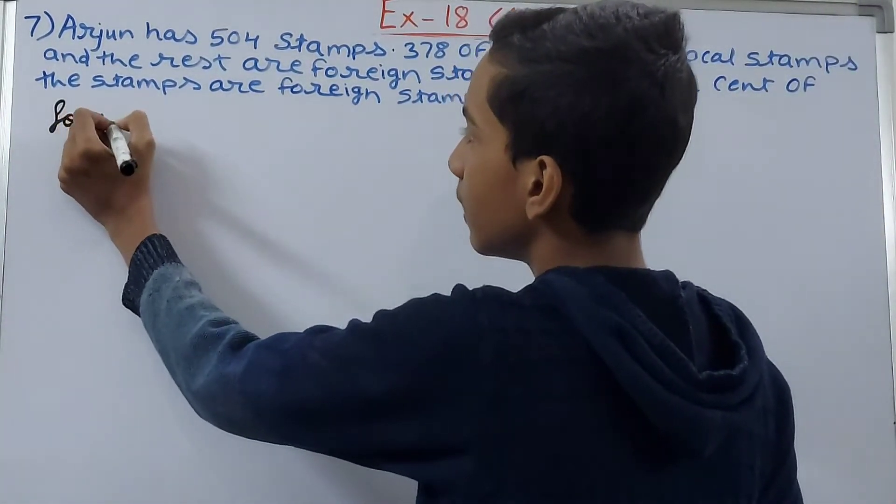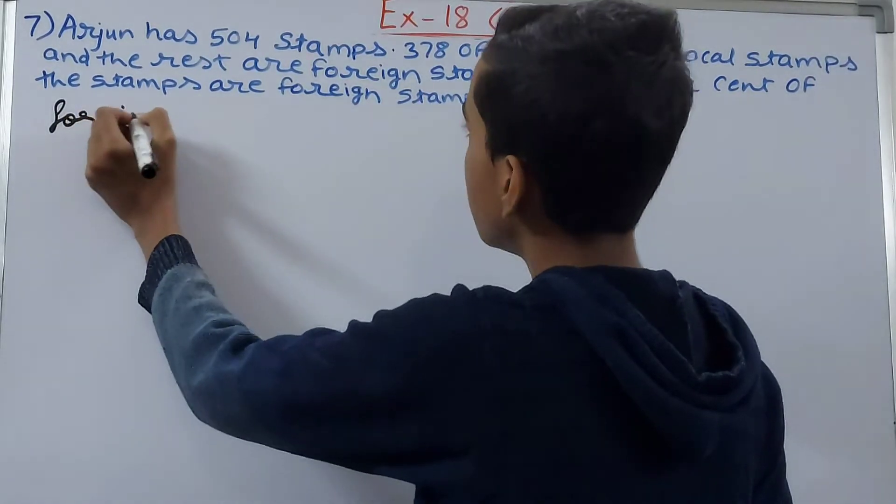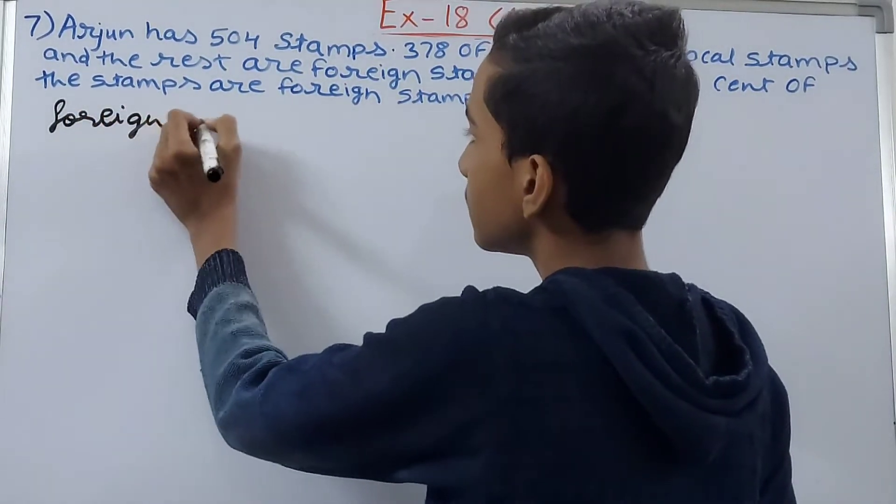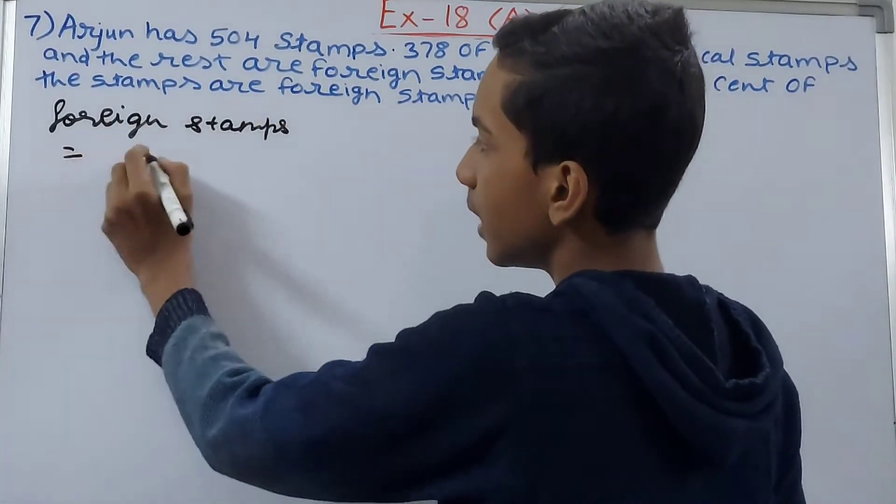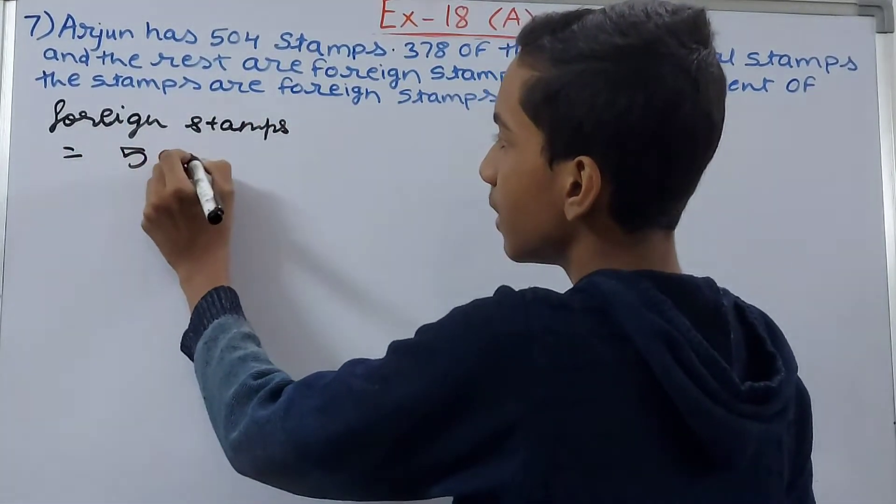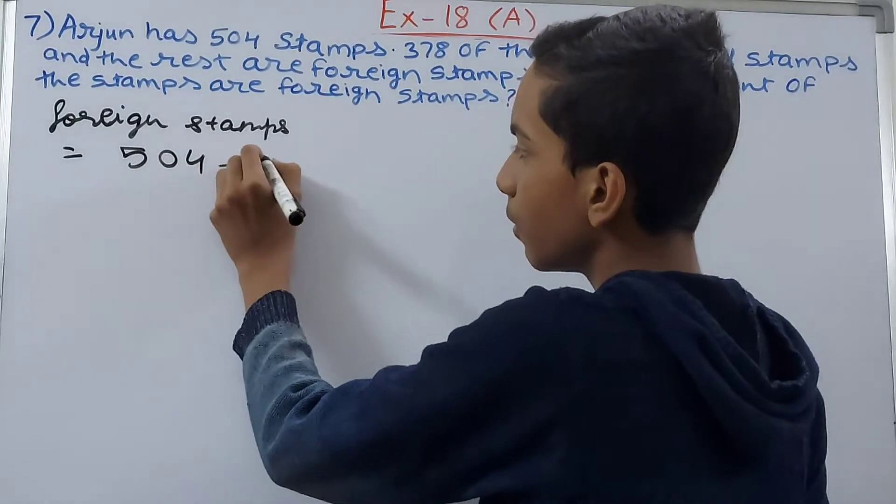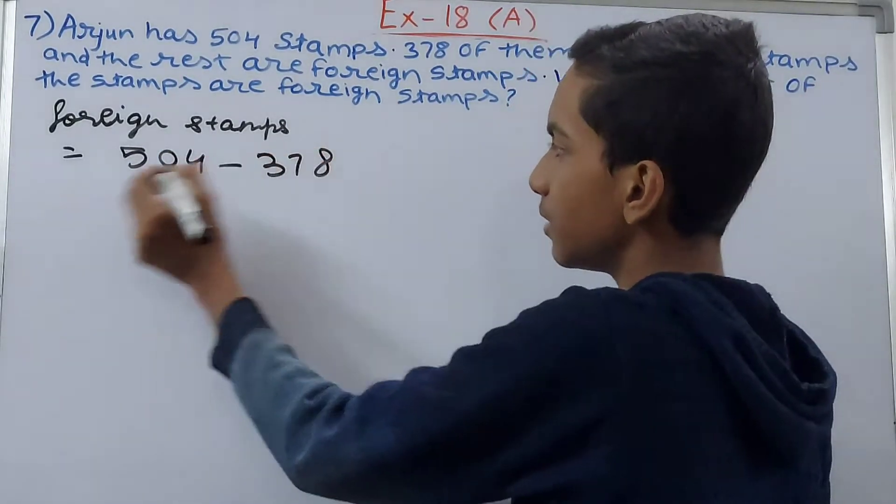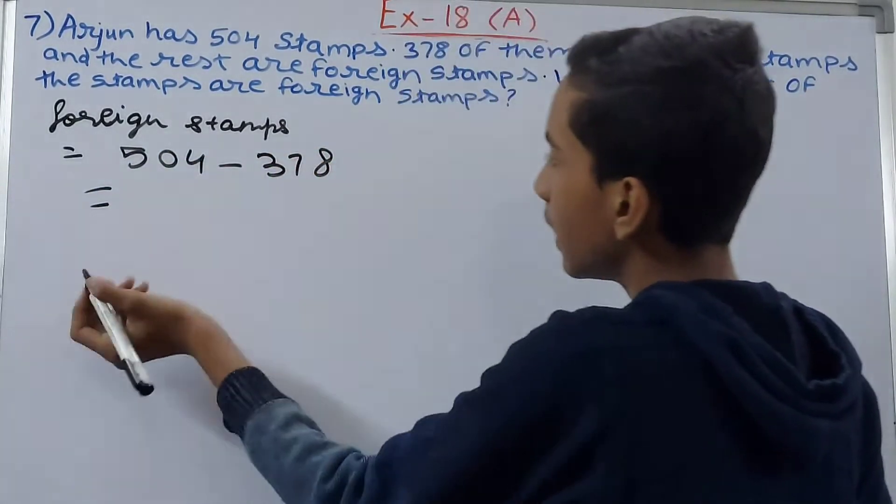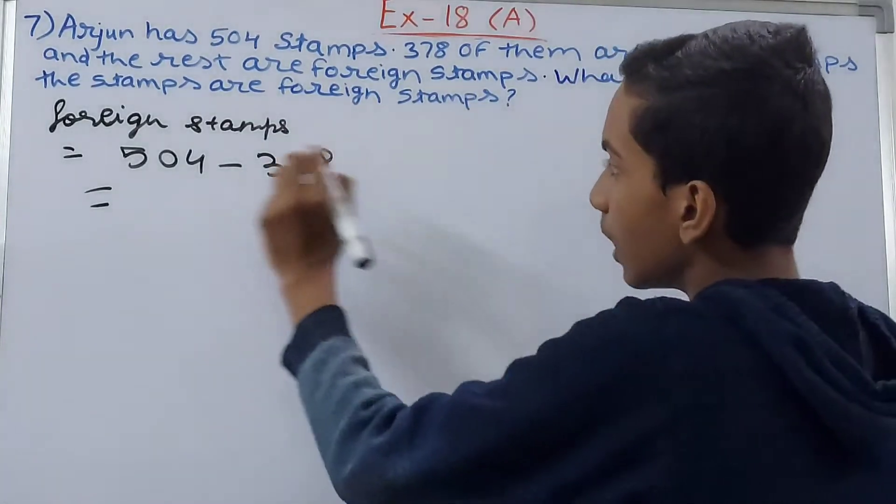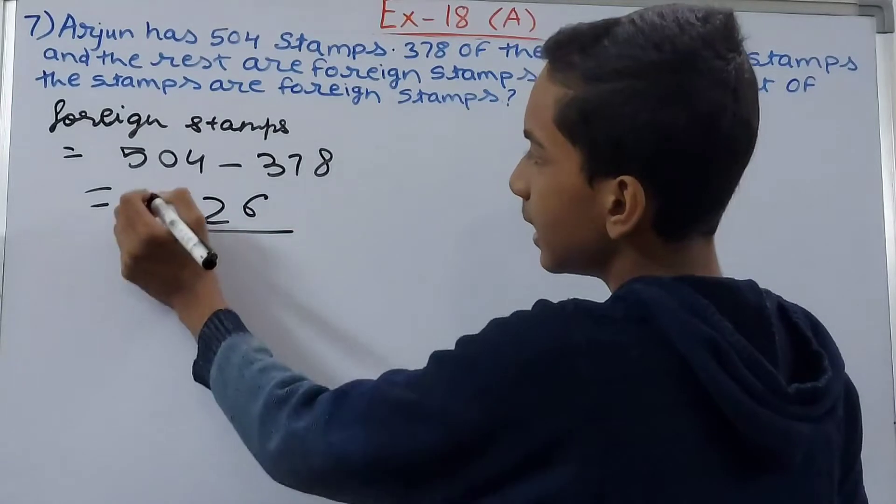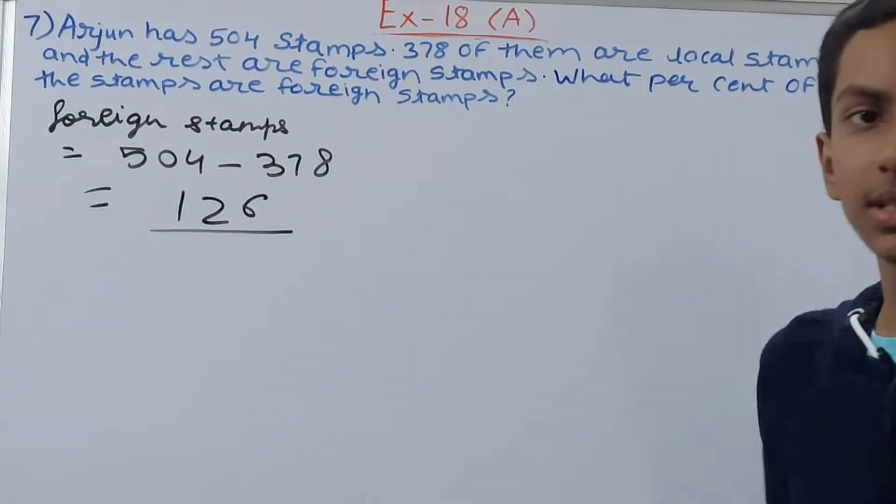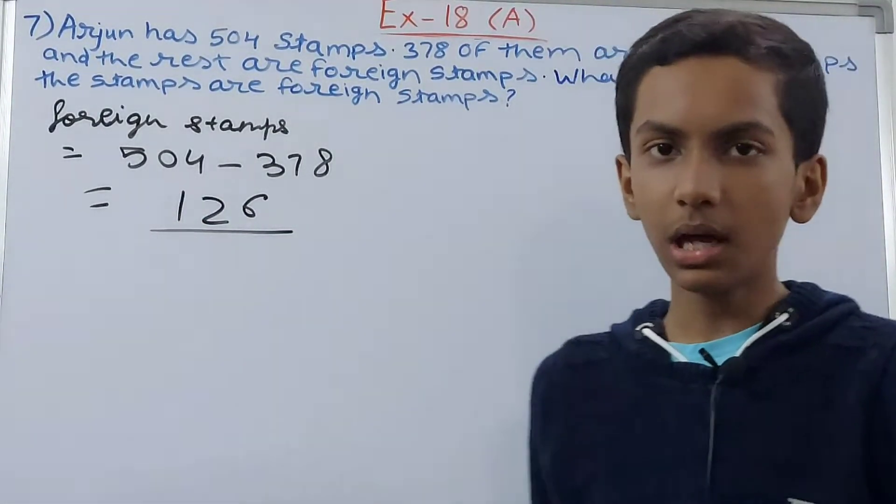So, foreign stamps: the number of local stamps was 378 and the total was 504, so 504 minus 378. This will be 14 minus 8 is 6, and 9 minus 7 is 2, so 126. He had 126 foreign stamps.